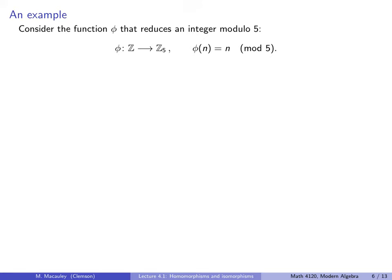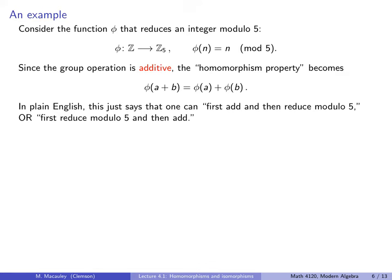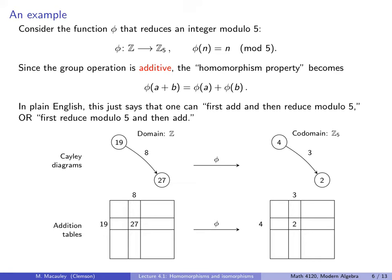Let's do an example. Consider the function phi that takes an integer and reduces it modulo 5: phi(n) = n mod 5. The group operation is additive, so the homomorphism property becomes phi(A + B) = phi(A) + phi(B). In plain English, one can first add the numbers together and then reduce modulo 5; or one can first reduce the numbers modulo 5 and then add them together modulo 5. Both give the same result.